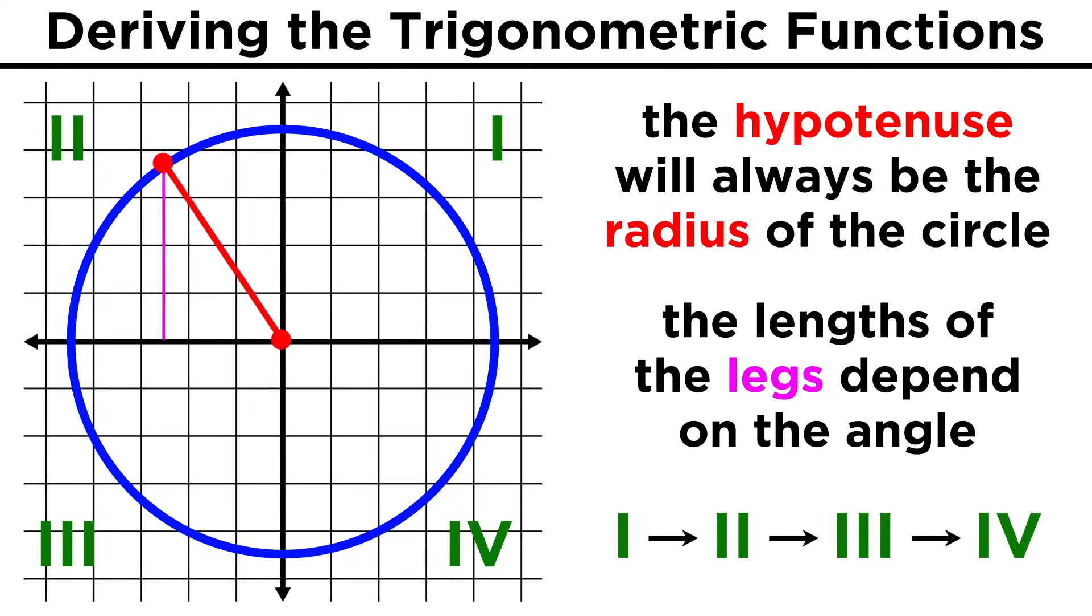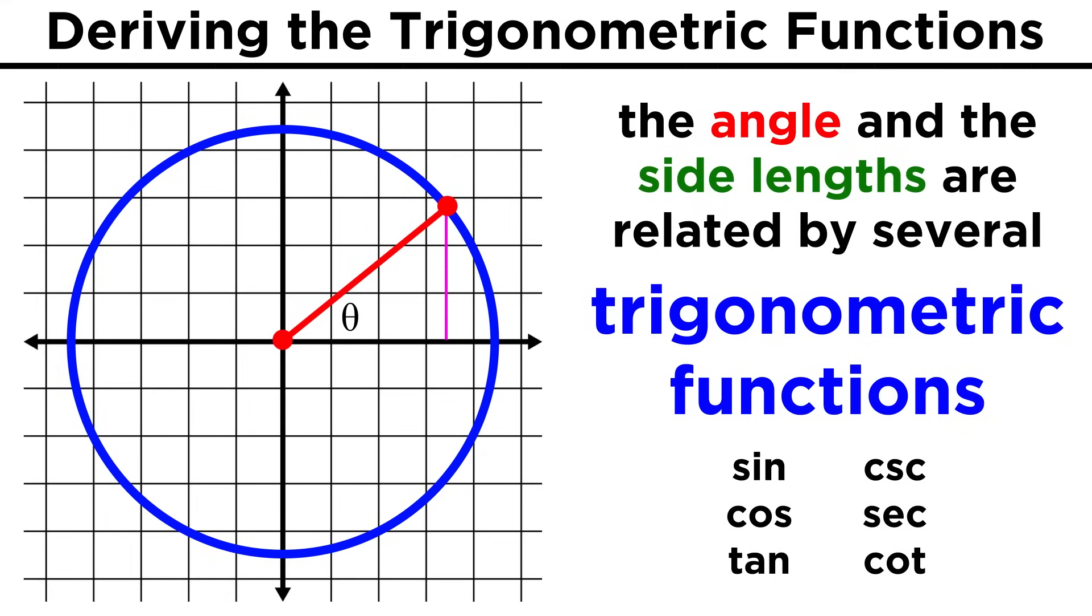When we get past the vertical, the triangle is now in quadrant two, and as we pass the horizontal, the triangle appears in quadrant three, and finally quadrant four. To describe the precise relationship between these side lengths and this angle, we can use trigonometric functions.